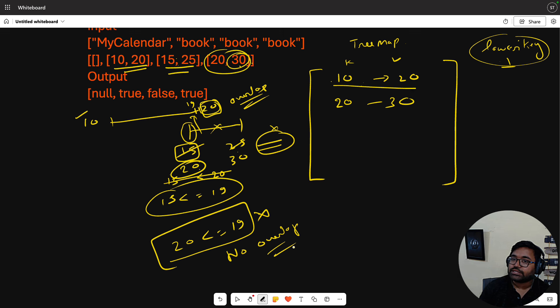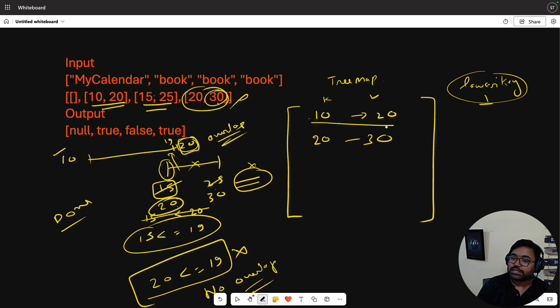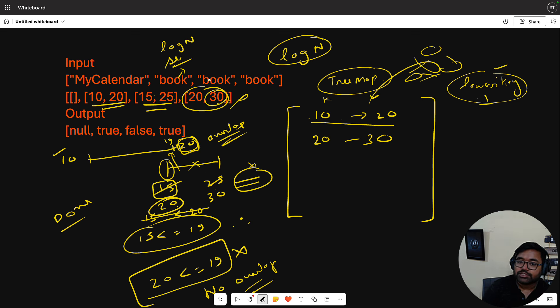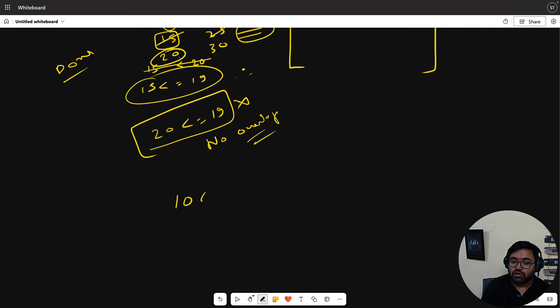Obviously we will not insert if there's overlap. Next let's try 20,30. We check: is 20 less than or equal to 19? The condition is false, which means there is no overlap. So we do a blind insertion of 20,30. What will be the time complexity? The book function does two operations: search using lowerKey takes log n, and insertion takes another log n. So if you call the API 1000 times, it's 1000 times 2 log n overall time complexity. Space is whatever you insert.